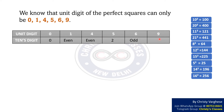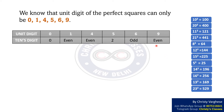Now, consider the case when the unit digit is 9. Consider 13² = 169 and 23² = 529. In both these cases, the unit digit is 9, and the tenth digits are 6 and 2. Which means that the tenth digit is even.